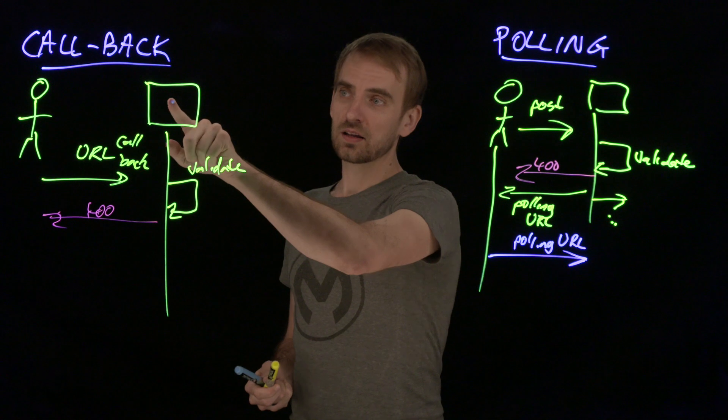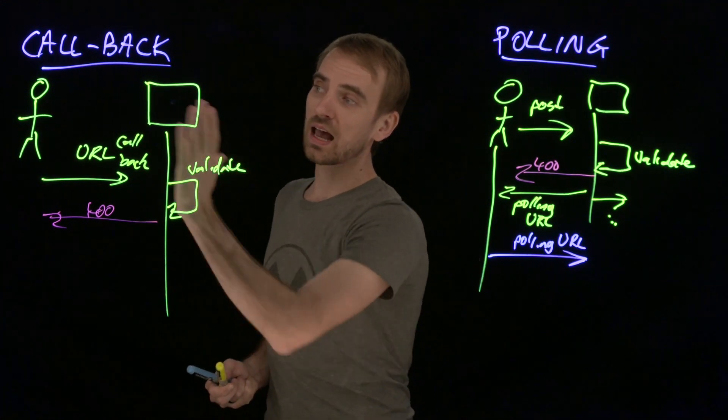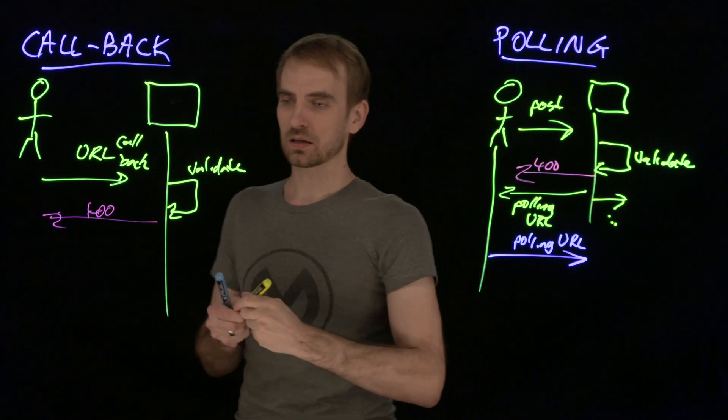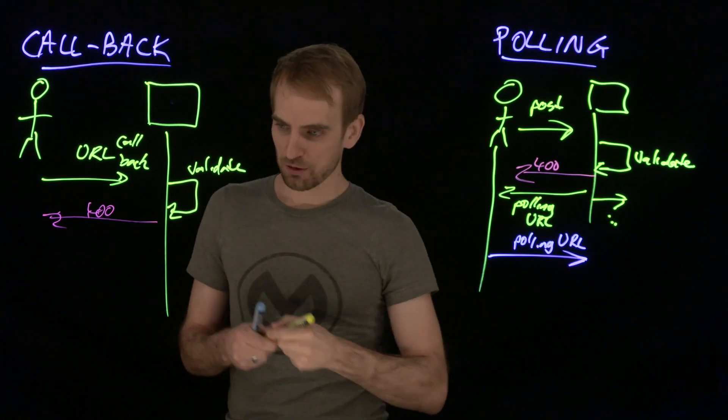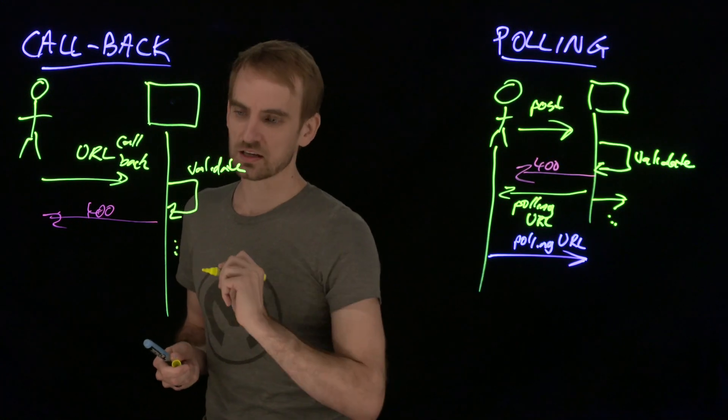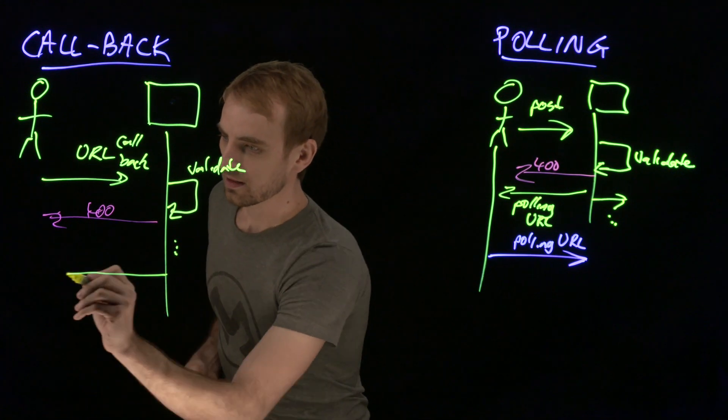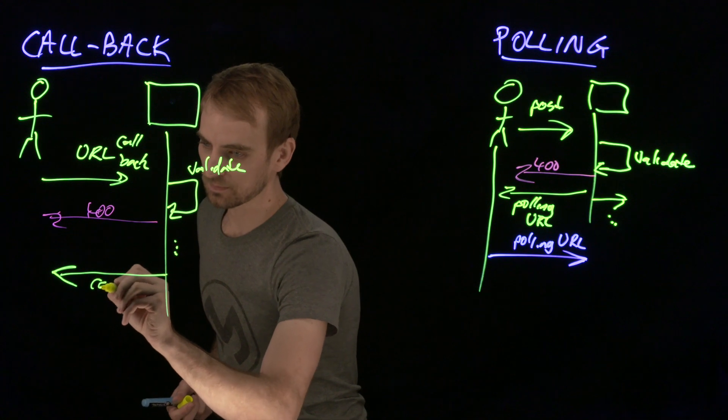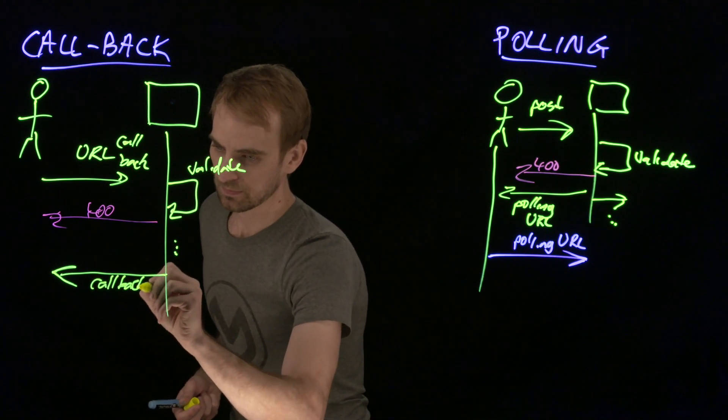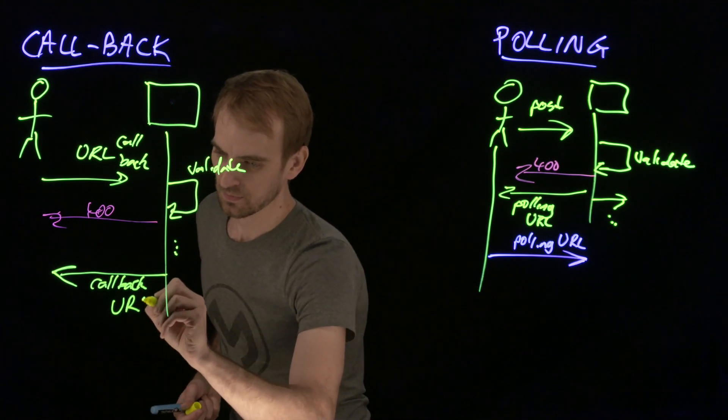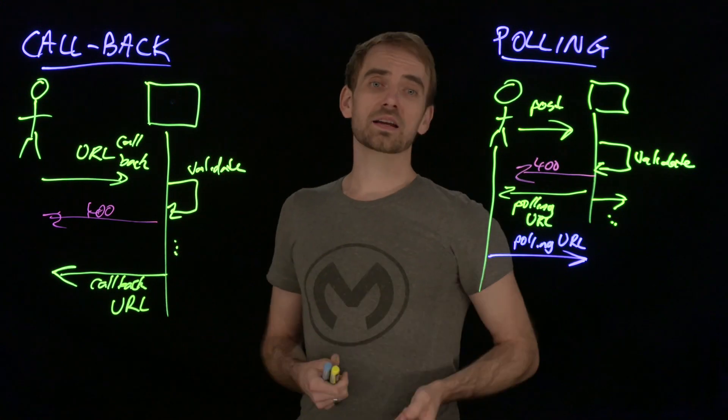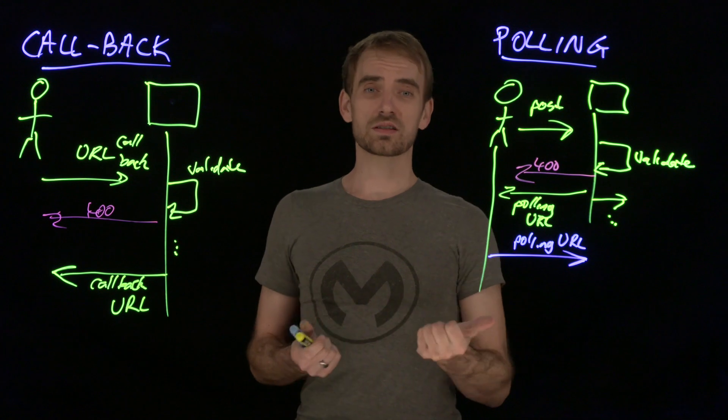This does rely on the server turning into a client and being able to make a network connection out to that endpoint. As far as the processing, whatever the processing is, and then this is going to make a call to whatever that callback URL is. And that is the other mechanism for doing asynchronous invocation.